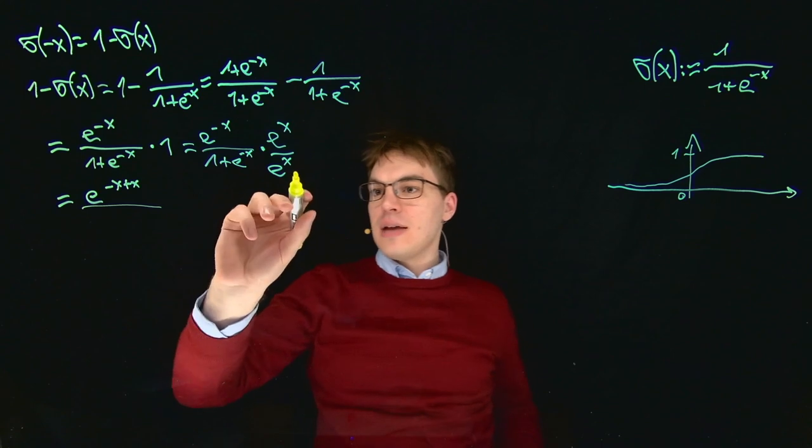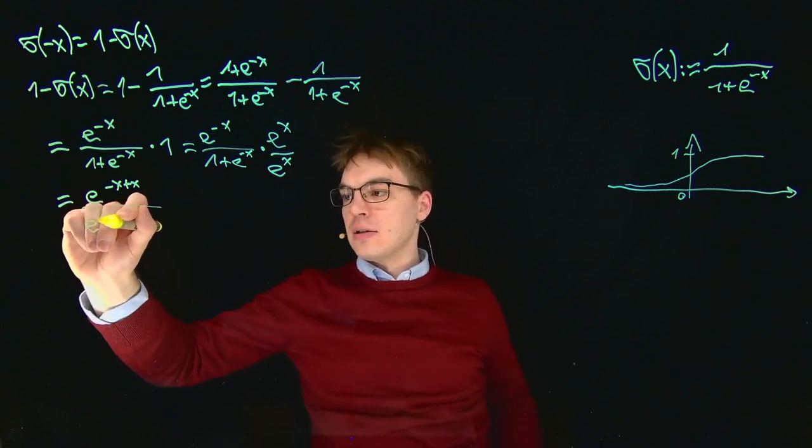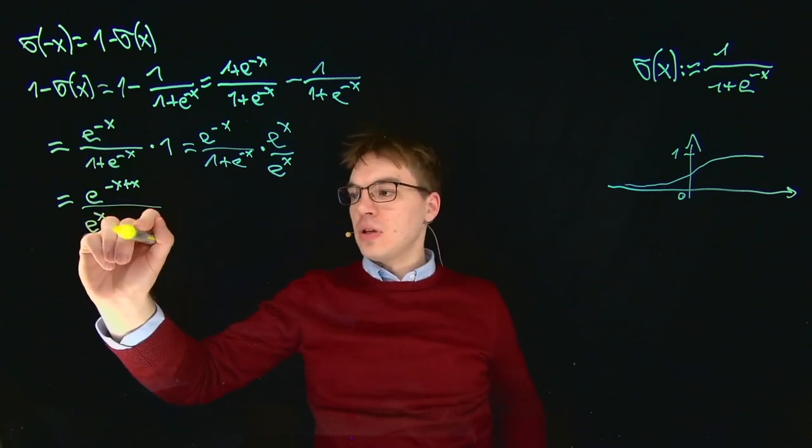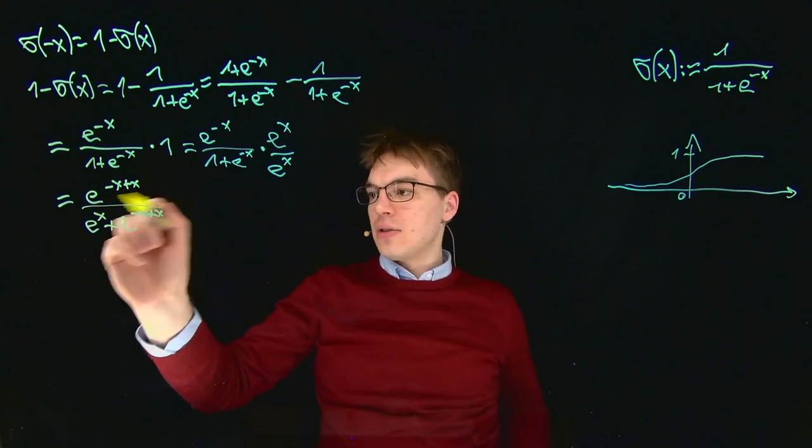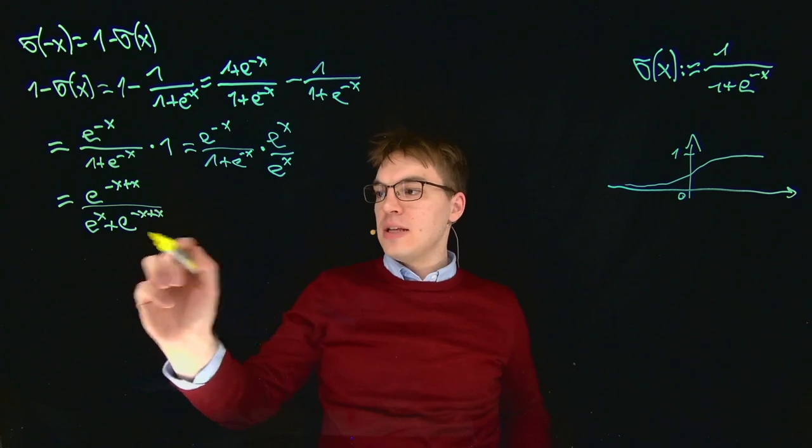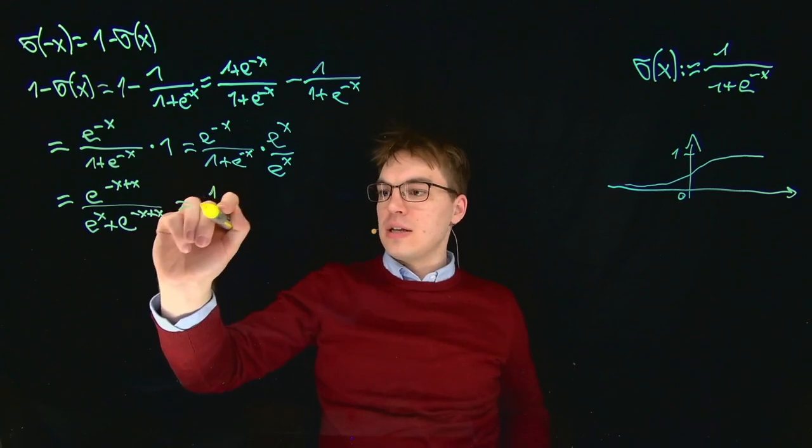Here we get one times e to the power of X plus again e to the power of minus X plus X. So this part over here is one, this part over here is one.